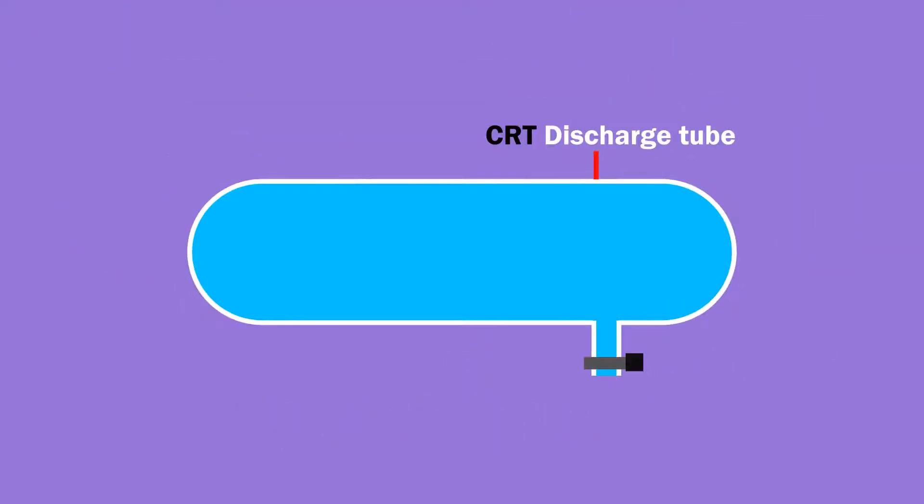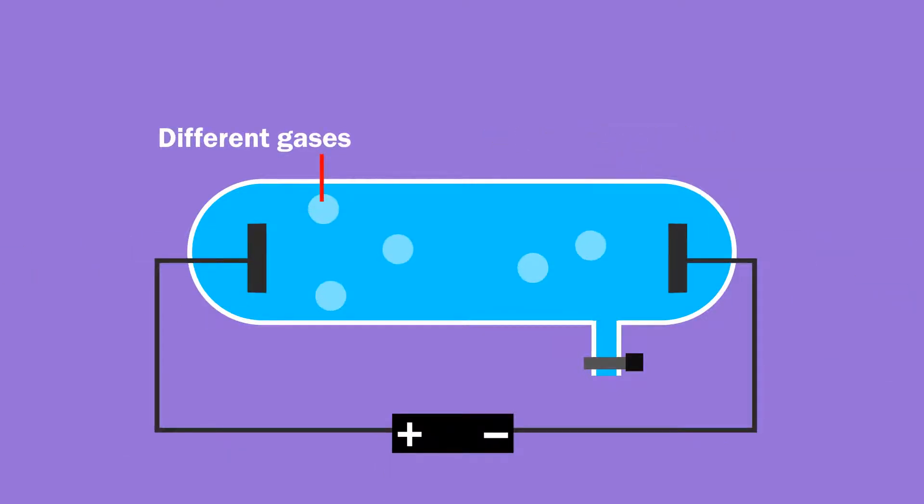CRT is a type of discharge tube. In discharge tubes, you can fill different gases and apply voltage. Voltage is applied at electrodes. The positive terminal of the battery is applied at the anode and the negative terminal is connected at the cathode.